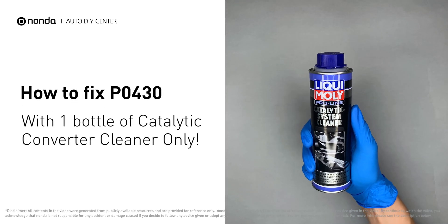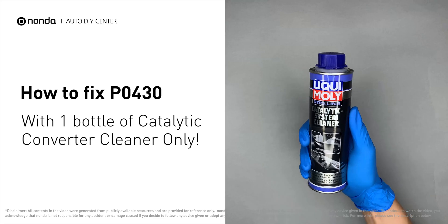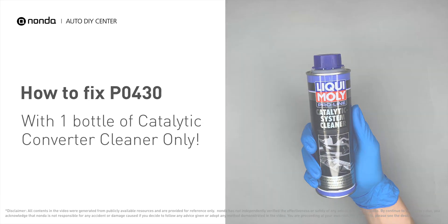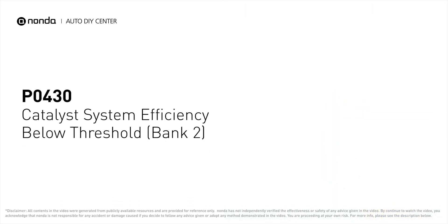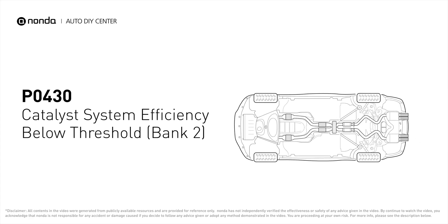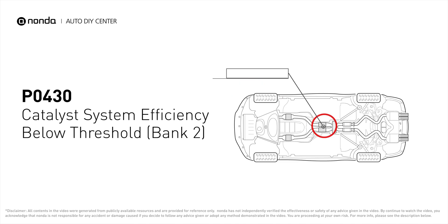With one bottle of catalytic converter cleaner, you can easily fix the P0430 error code by yourself. P0430 means your catalyst system efficiency is below threshold near engine bank 2, which indicates that the catalytic converter is not functioning efficiently, so the vehicle is increasing the output of harmful pollutants.